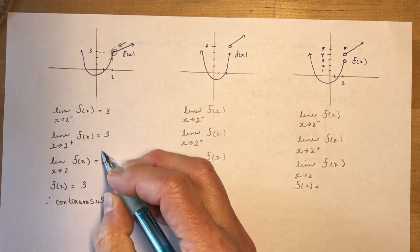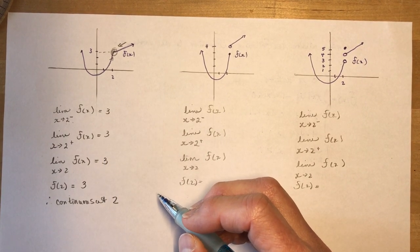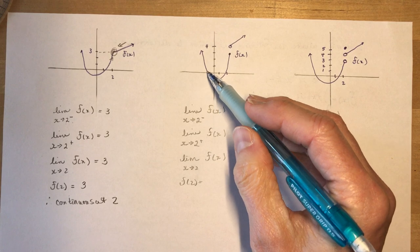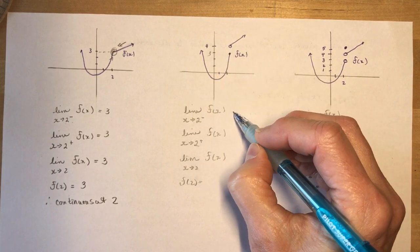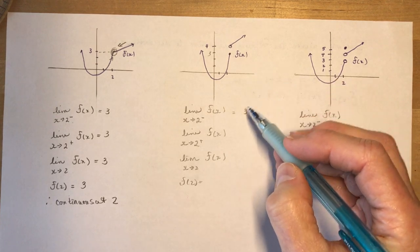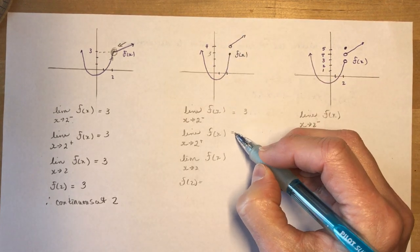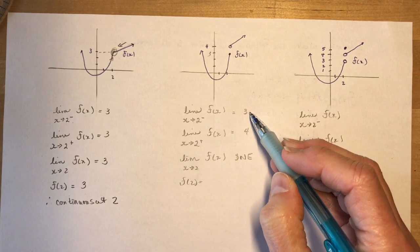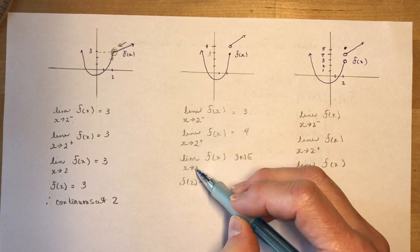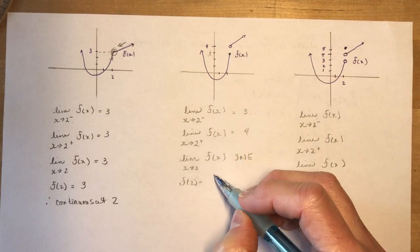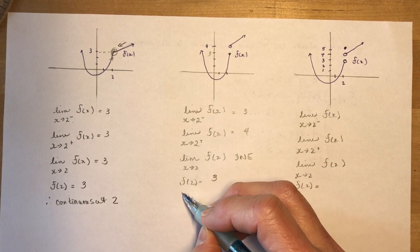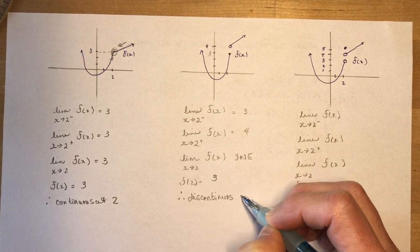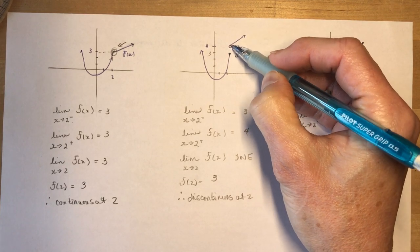The question would probably ask: is this continuous at x equals 2? In the second case, the limit as x approaches 2 from the left is 3, but the limit from the right is 4. The limit as x approaches 2 does not exist because the left and right limits are not equal. Even though f(2) equals 3, the function is discontinuous at x equals 2 because the two parts don't join together.